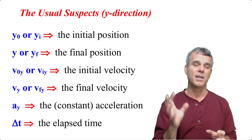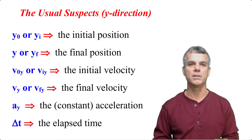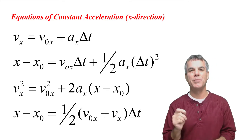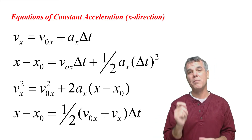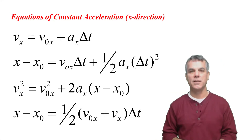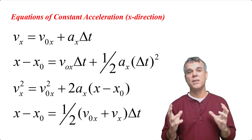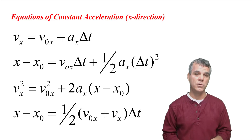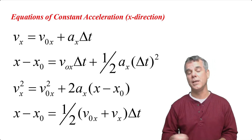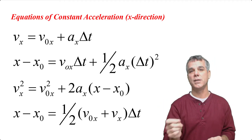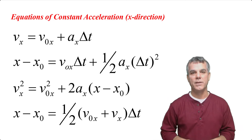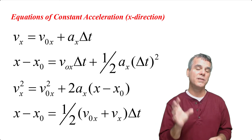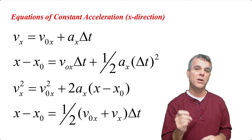Now that we know what the different quantities are, let's take a look at the equations of constant acceleration. Three quick points before I go through them. One, as the name implies, the acceleration must be constant — meaning both the magnitude and the direction of the acceleration must be constant. Two, depending upon the textbook that you use, the notation for the different variables might be slightly different; just make sure you know what each variable's notation is for your textbook. And three, I'm not deriving these equations — they're derived in any physics textbook. What I want to focus on is how do you use these equations.